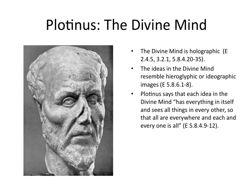Now we get back to Plotinus and talking about the divine mind. The divine mind is holographic. Plotinus, of course, doesn't know about holograms, but he understands the property of a part representing the whole in its entirety — having the exact same structure or being isomorphic to the whole. He describes that in the Enneads in several places. The ideas in the divine mind resemble hieroglyphic or ideographic images, Plotinus says. Each idea in the divine mind, quote, "has everything in itself and sees all things in every other, so that all are everywhere and each and every one is all." That's holographic language, sometimes called holenmerism — meaning that the whole is completely present in every part. Integral omnipresence is another phrase used to translate the Plotinian idea.